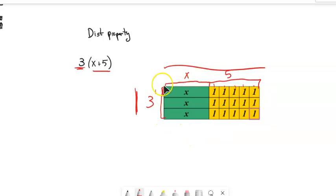And area is length times width. So this is the same as, well, what do I have? Three x's plus three rows of five, 15 ones. In other words, both of these are getting tripled. The x is getting tripled and the five is getting tripled.